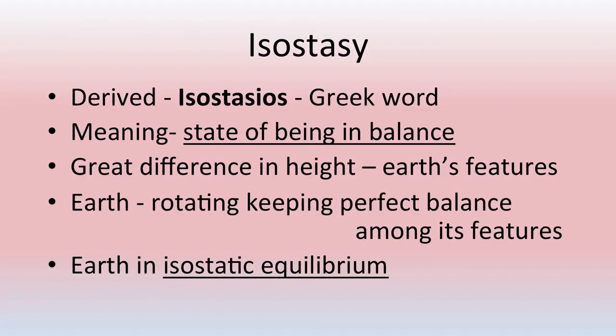What is isostasy? It is derived from the Greek word 'isostesios' and it means state of being in balance. There is great difference in height on the earth surface — mountains are very high, plateaus are lower, and plains are very low. The earth is rotating and keeping perfect balance among all these features of different height. In this manner, earth is in isostatic equilibrium.